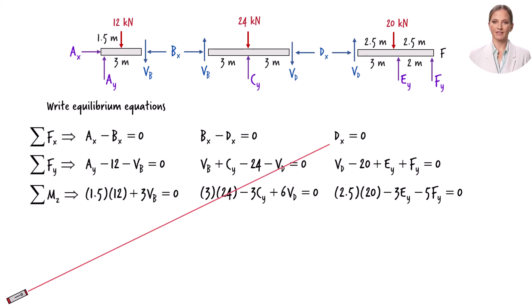This equation states that Dx equals zero. If we substitute zero for Dx in this equation, we get Bx equals zero. And this equation tells us that Ax is also zero.